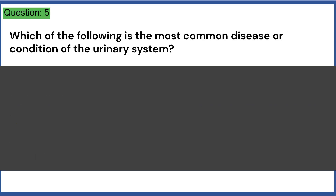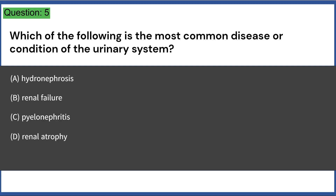Which of the following is the most common disease or condition of the urinary system? A. Hydronephrosis, B. Renal failure, C. Pyelonephritis, D. Renal atrophy, E. Nephrotic syndrome. Answer: C.